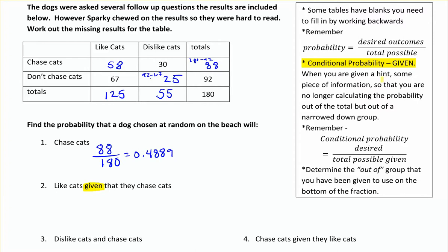So instead of guessing that probability out of all of the dogs, I'm going to give you a hint: this randomly selected dog likes to chase cats as well. So I'm narrowing it down. Given that they chase cats, I'm looking at only those 88 dogs — the others don't matter anymore. So instead of out of 180, it's now going to be out of 88 because I'm only looking at the 88 dogs that actually chase cats. Out of those 88, 58 of them like cats. So it's 58 out of 88, which works out to 0.6591.